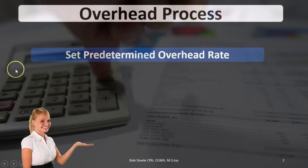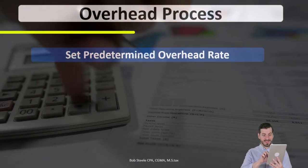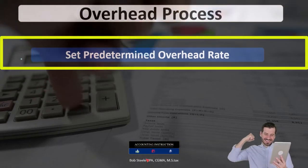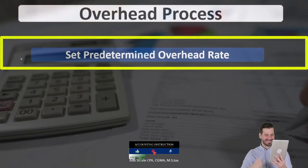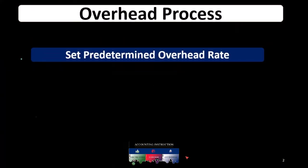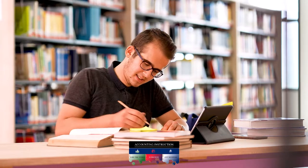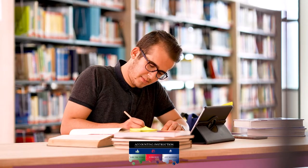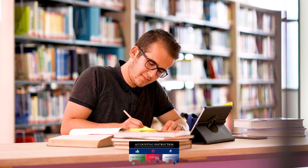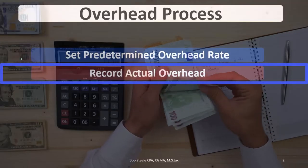The items we need to consider in the overhead process: first, we need to set a predetermined overhead rate, and usually we do that based on the prior period. We'll take the prior period information and set up the predetermined overhead rate — we'll do that after we go through actual overhead, or what would be included in overhead, to give us an idea of how that might be done.